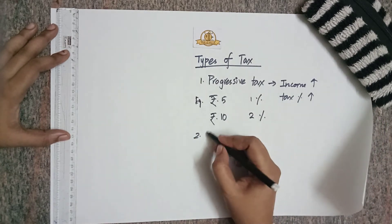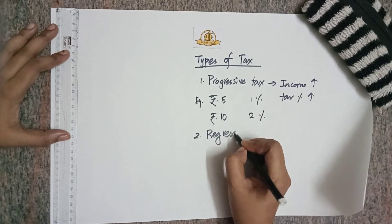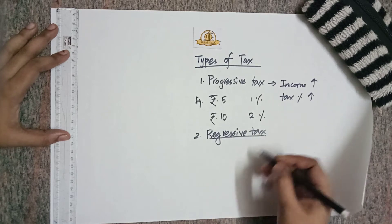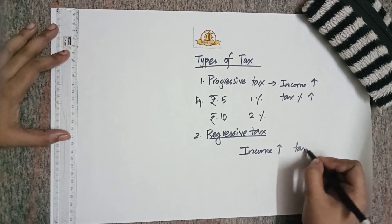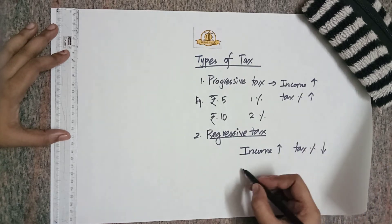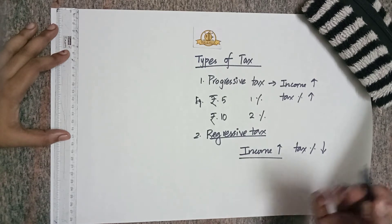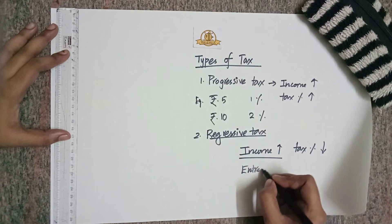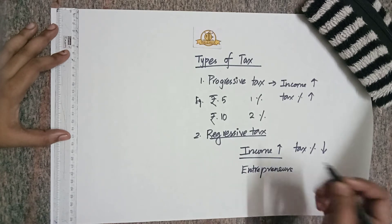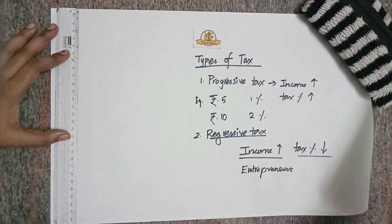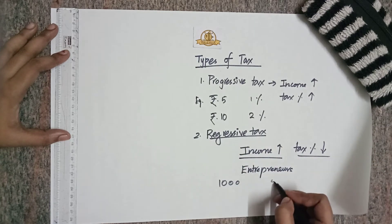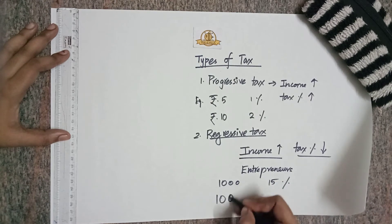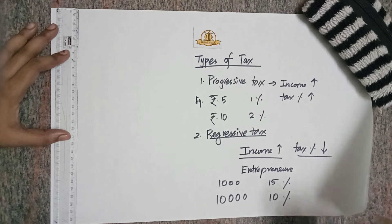The second type is regressive tax, which is just the opposite of progressive tax. In regressive tax, if there is a rise in income then the tax percentage will decrease. This is followed in many western countries — most capitalist countries follow this — because if entrepreneurs and business owners earn more, we should support them by reducing their tax. For example, if you are earning rupees 1,000 and paying 15% tax, then if you earn one lakh your tax percentage will be only around 10%.